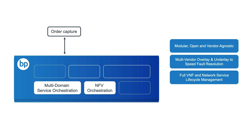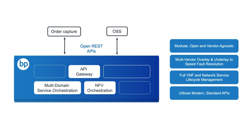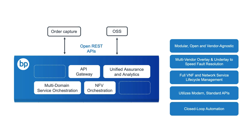For easing the integration challenges associated with OSS-BSS, we also include an API gateway with flexible API plug-in capability to support proprietary OSS APIs, as well as many of the newer API standards and service models coming out of TMF and MEF. With Unified Assurance and Analytics (UAA), we unify network and service assurance by collecting real-time telemetry and performance data from multi-vendor overlay and multi-domain underlay resources, and in combination with MDSO and NFVO, this enables true closed-loop automation for the entire SD-WAN services lifecycle.